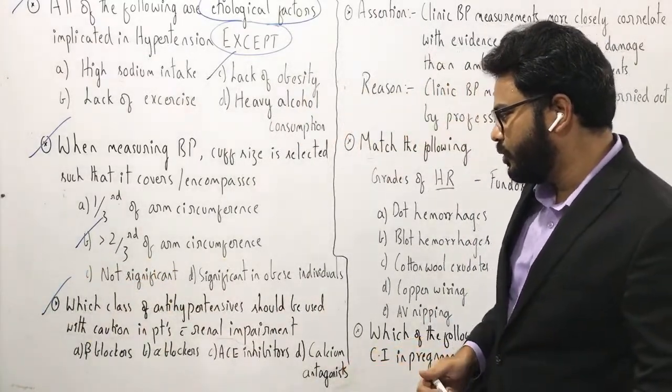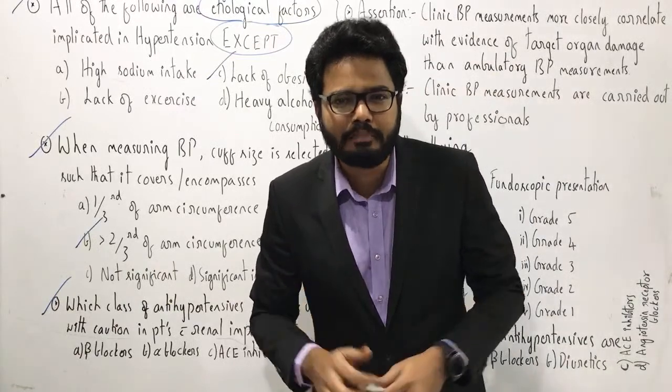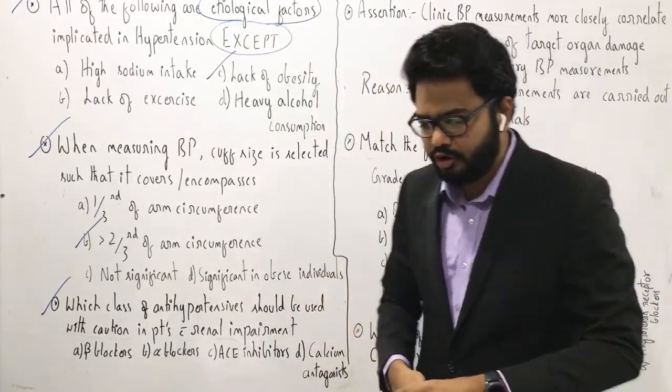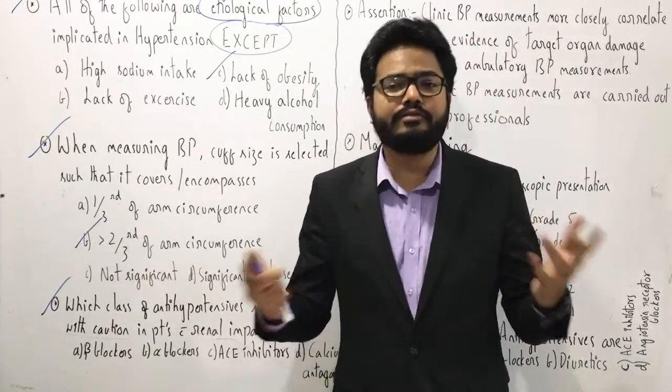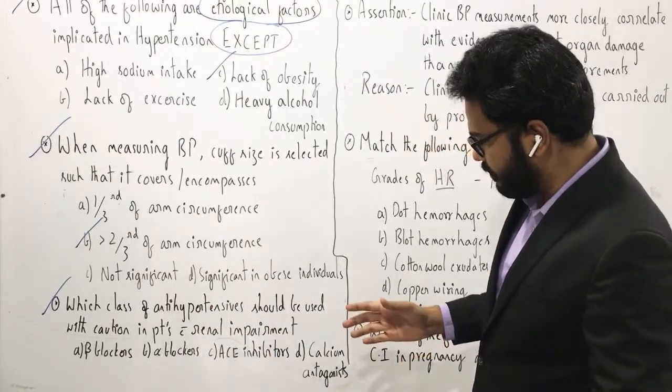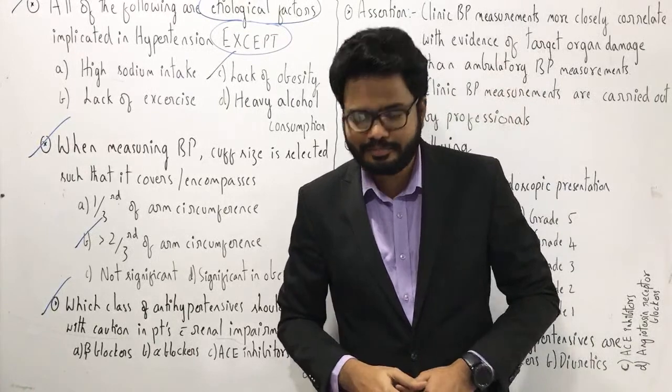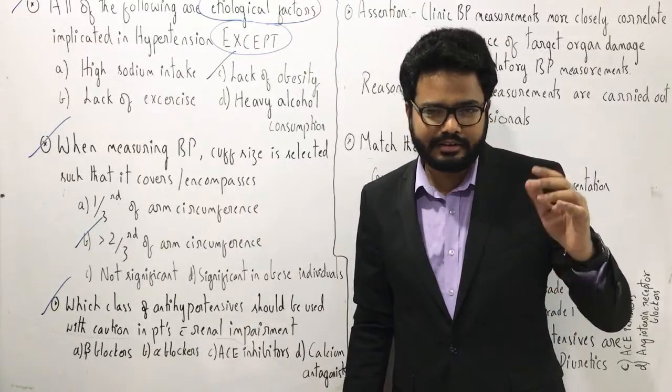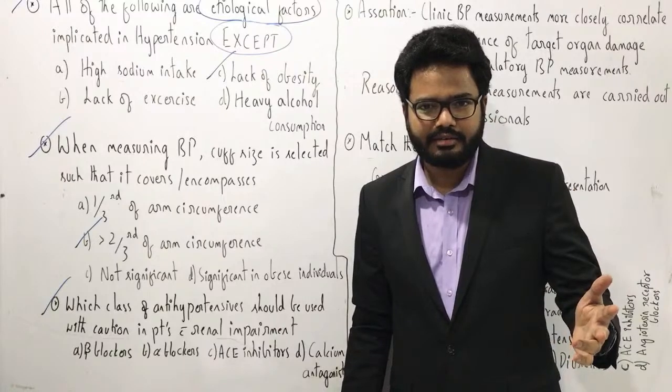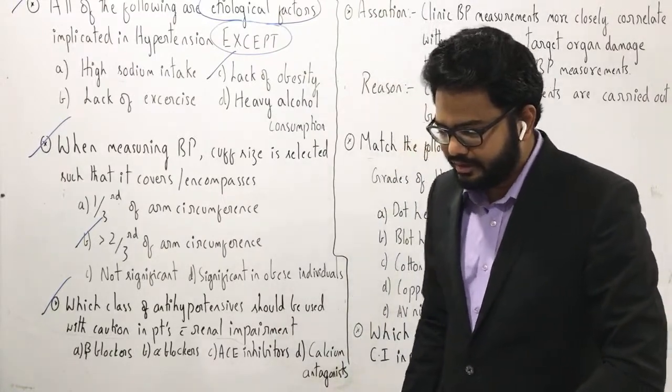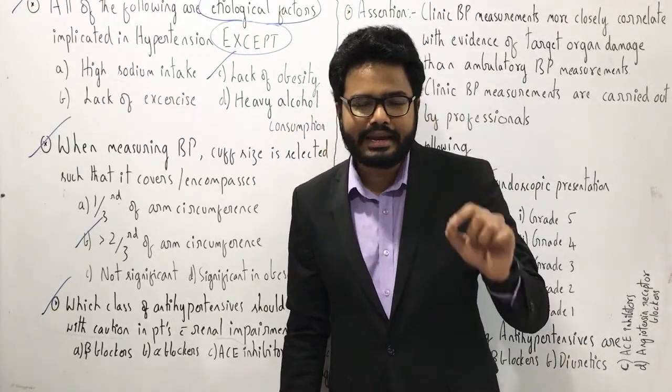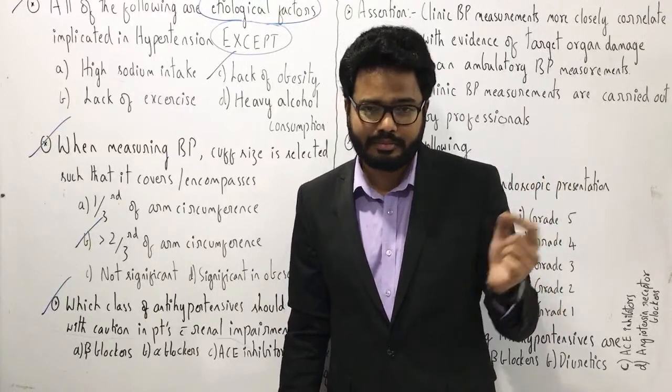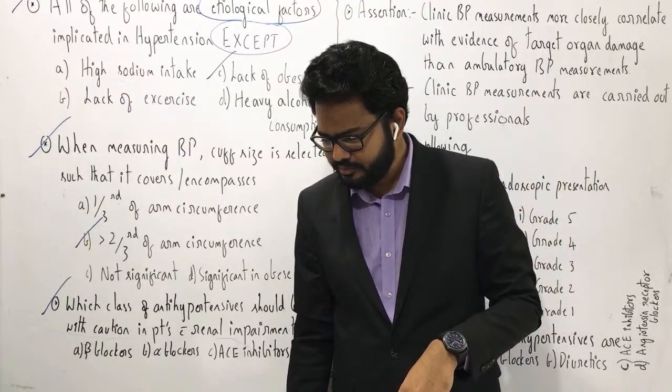Which class of antihypertensive should be used with caution in patients with renal impairment? Go through the question carefully and go through the keywords as well. So options include beta blockers, alpha blockers, ACE inhibitors, calcium antagonists. In fact, we discussed the same yesterday as well. In case of pregnancy, in the table which we had gone through, two classes are contraindicated because of their teratogenic potential. Angiotensin converting enzyme inhibitors, all PRILs, and even angiotensin receptor blockers, Sartans.